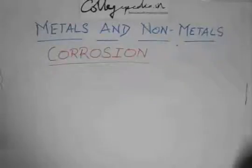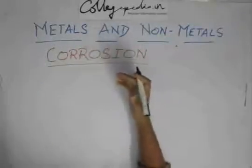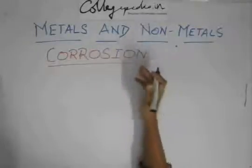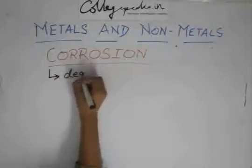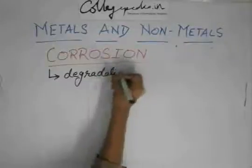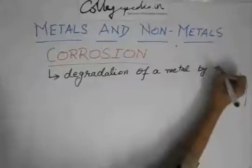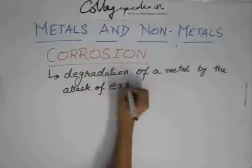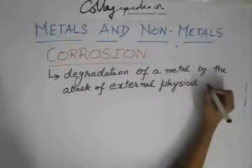We have all heard the word corrosion. But what is the actual meaning of corrosion? Corrosion is basically the eating away of a metal by some external force like water, moisture, air, or any chemicals. It can be called the degradation of a metal.